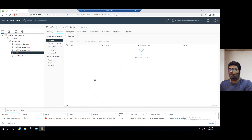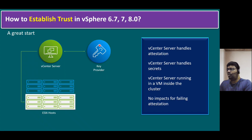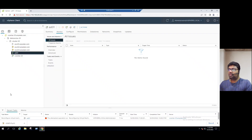So now we have a good idea of how this works. vCenter server handles attestation — it does all the validation and authorization. vCenter server also handles the secrets, and the vCenter server itself runs as a VM inside the cluster. Even in our lab, our vCenter server is running within the cluster as one of the VMs.